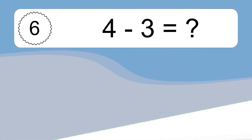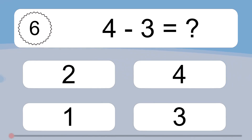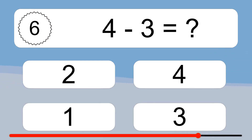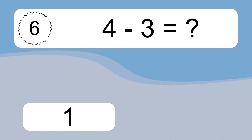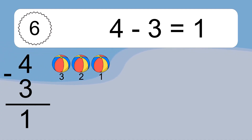4 minus 3 equals what? 4 minus 3 equals 1. Let's count it: 3, 2, 1.